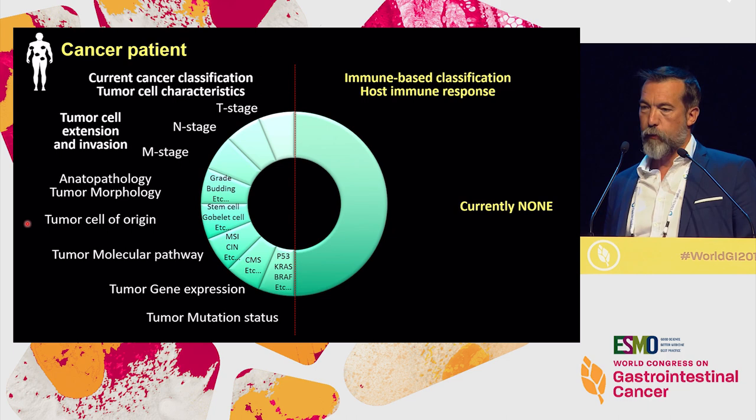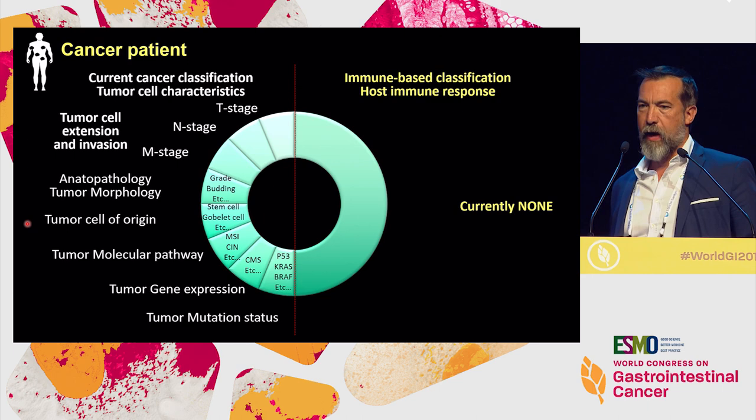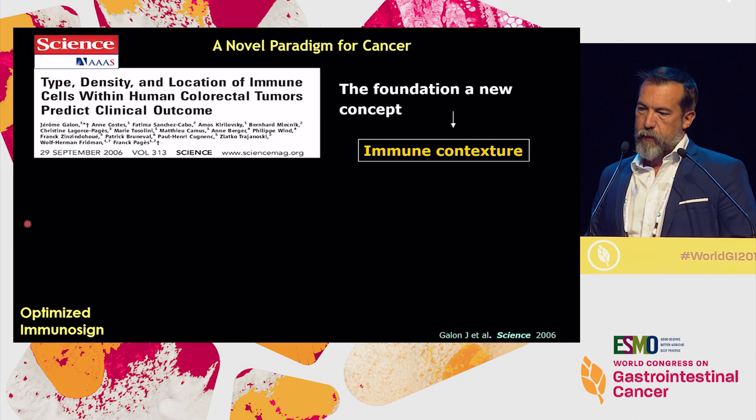But when a patient comes to the hospital, we don't know anything about the immune system of the patient. We don't know anything about the host immune response that all patients have in different ways. There is currently no evaluation of immune parameters. Back in 2006, we published in Science a paper that was the foundation for the concept of immune contexture that we proposed.